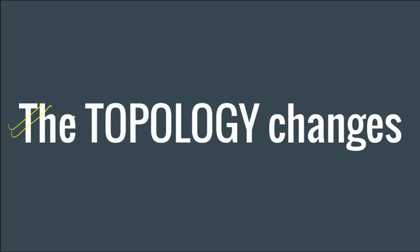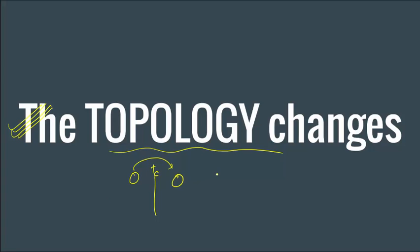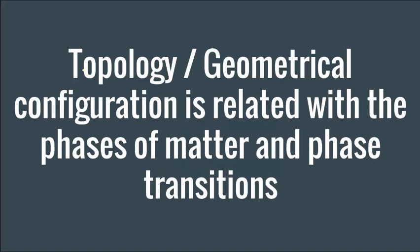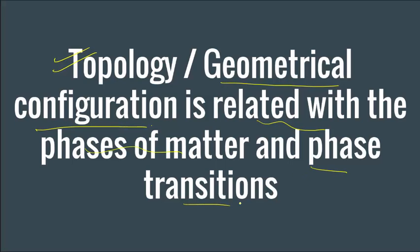What they say is the topology changes. We were asking what changes when a material crosses the critical temperature limit — suddenly properties change, so internally what changes? The change which takes place internally is the topology changes. Now we have to understand what is topology. Topology, we can also call it geometrical configuration. It is a branch of mathematics and it is related to the phases of matter and phase transitions.